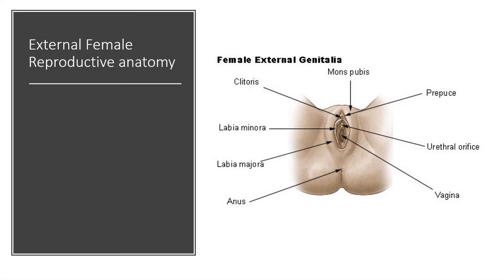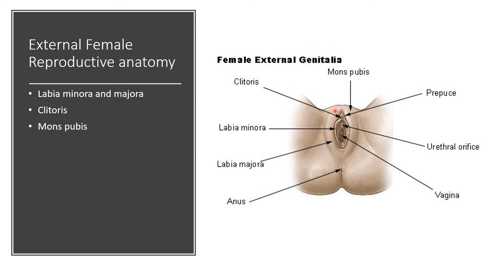Let's talk about the external female reproductive anatomy. We have the labia minora and majora — labia means lips. The labia minora are the smaller lips and the labia majora are the larger lips. You have the clitoris, and if you look closely you can see the clitoral hood. The clitoris is analogous to the penis in a male, except smaller. You have the mons pubis, which is the pubic mound. You have the vaginal opening.